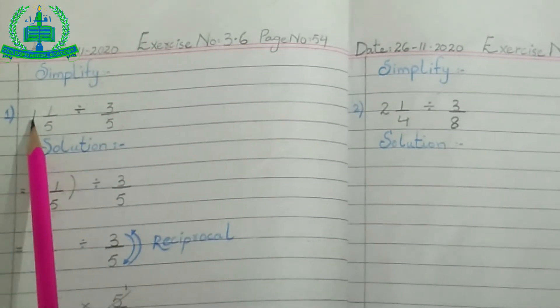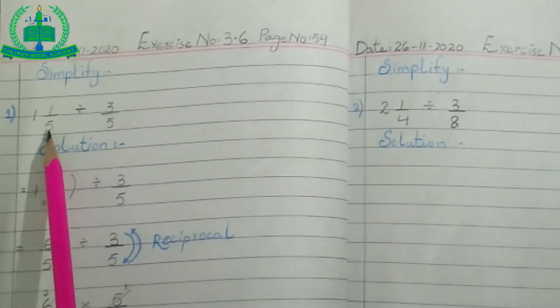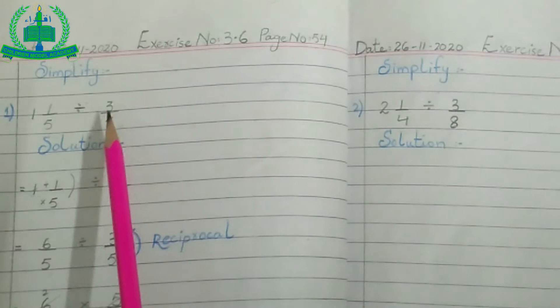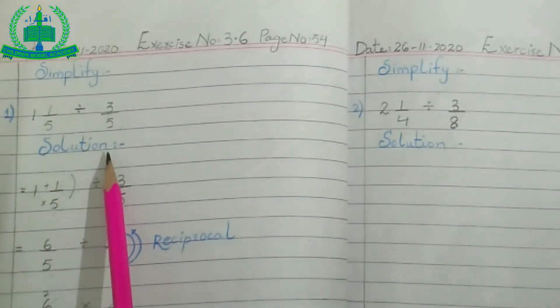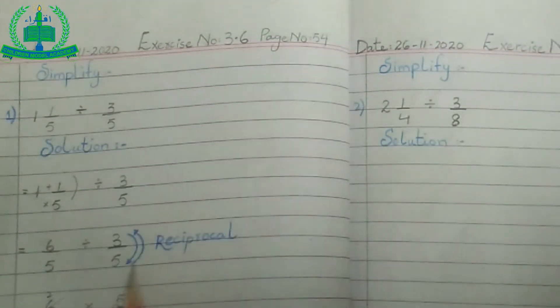Question number 1 is 1 whole 1 upon 5 divided by 3 upon 5. Write solution heading, now solve this question.